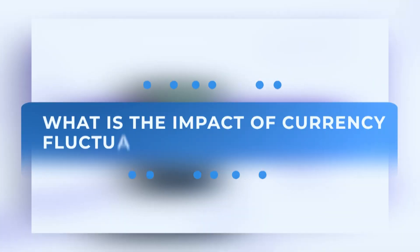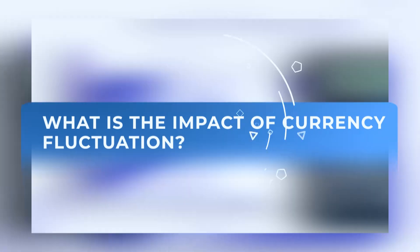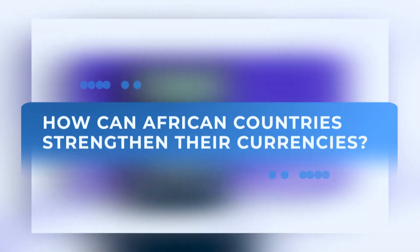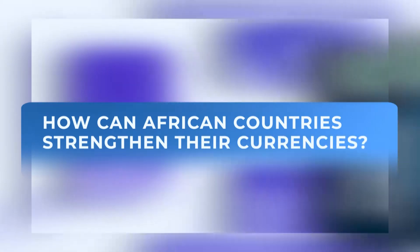When a currency fluctuates, there are two things that happen. If the currency is weak or depreciates, then exports become very expensive. One of the easiest ways to strengthen a currency is to have one currency.